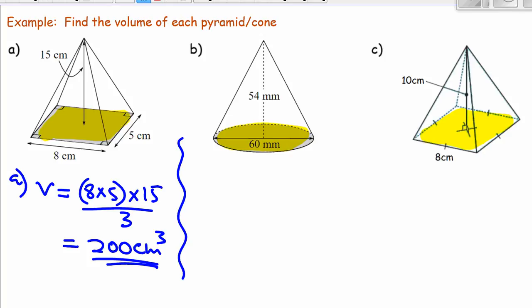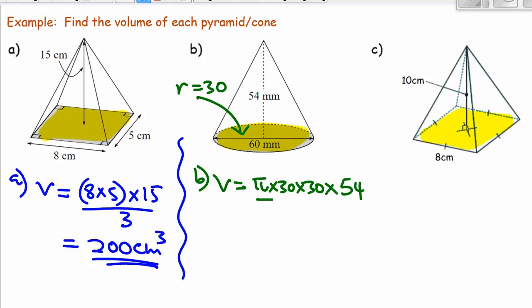For B, you have to start by finding the area of the base. Remember, the radius is 30. So the area of the base will be pi multiplied by 30 multiplied by 30, and the height is 54. Divide that by 3 and we end up with 50,893.8 millimetres cubed.